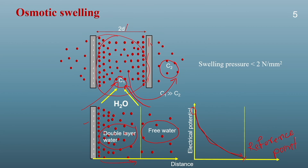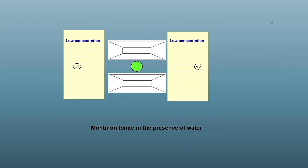Osmotic swelling depends on many other factors such as concentration of the ions, valency of the ions, dielectric constant, and pH. Since these factors control the osmotic swelling, they also control the total swelling of an expansive soil. The amount of osmotic swelling is significantly higher in comparison to inner crystalline swelling, so any change in osmotic swelling will also influence the total swelling of an expansive soil.